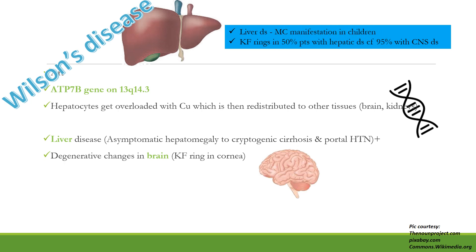Liver disease is the most common manifestation of Wilson's disease in children and can precede CNS symptoms by at least 10 years. It is very unusual for CNS symptoms to present as the first sign in a child. CNS disease is more common in patients over 20 years of age. Kayser-Fleischer rings are seen in 50% of patients with hepatic disease compared with 95% with neurological Wilson's disease, because the eye is an extension of the brain.